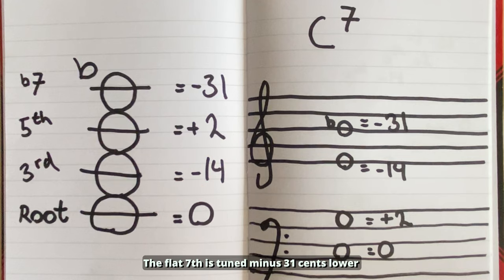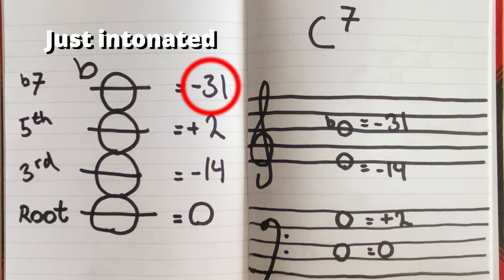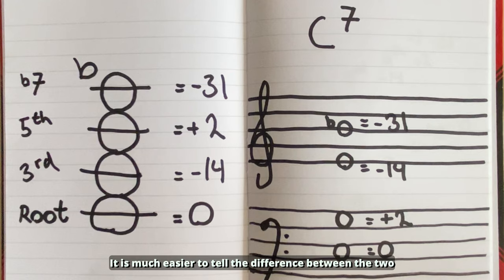The flat seventh is tuned minus 31 cents lower than that of the piano. It's much easier to tell the difference between the two and it's almost a quarter of a note.